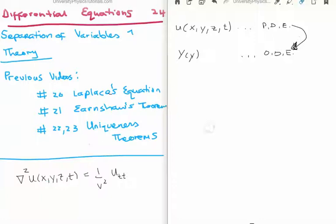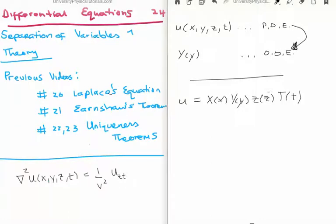The method does it by making the following assumption: we assume that our function u, which is a function of four variables, can be broken down into the product of four other functions, each a function of only one variable — X a function of small x, Y a function of small y, Z a function of small z, and T a function of small t. You might wonder if that's a fair or valid assumption. I'm going to tell you that almost every equation in physics is solved this way and it has always worked. The Schrödinger equation, the wave equation, the electromagnetic wave equation, the heat equation — all solved through the method of separation of variables. If you're discussing the hydrogen atom, for example, you'll be using separation of variables to separate your radial and angular equations.